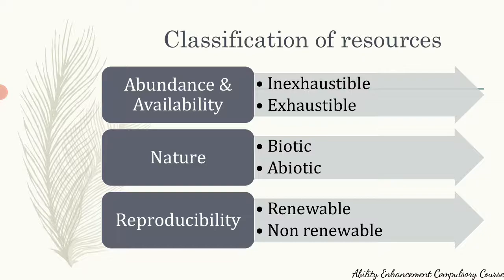The second parameter for classification of natural resources is based on their nature — whether they are biotic or abiotic. Biotic resources are derived from living organisms, such as forest resources and wildlife. Abiotic resources are non-living, such as land, water, and wind.